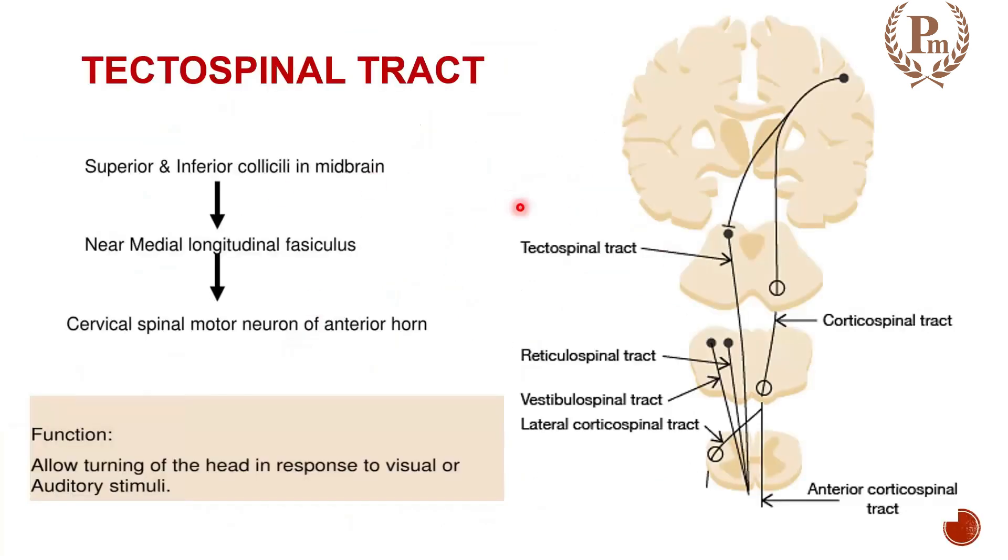So, how is it that they are originating from the superior and the inferior colliculi present in the midbrain? They go near to the medial longitudinal fasciculus. As they go down, they go near to the medial longitudinal fasciculus and they finally land up into the spinal neuron of the anterior horn. Now, what are they important for?